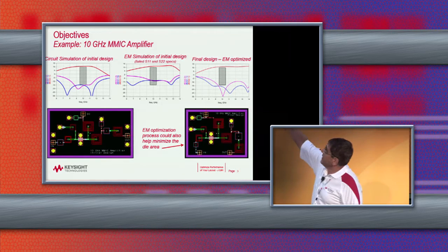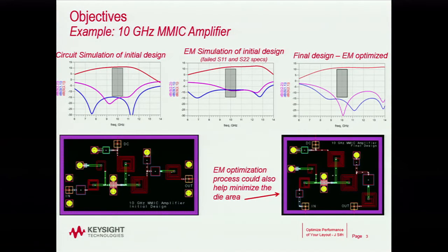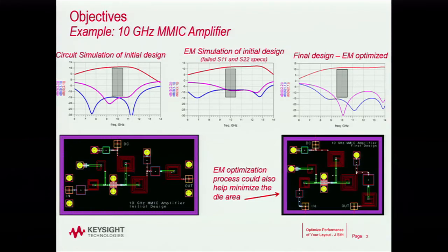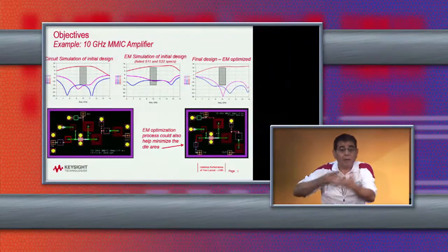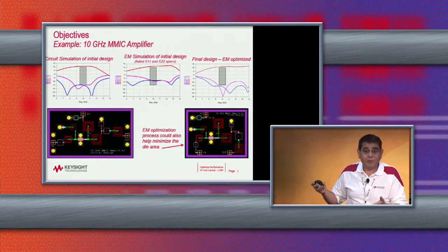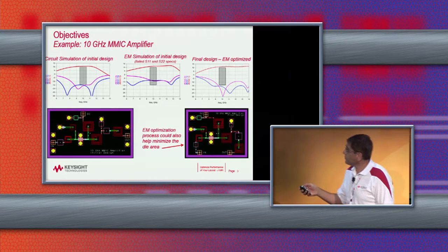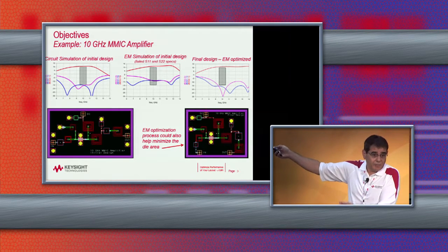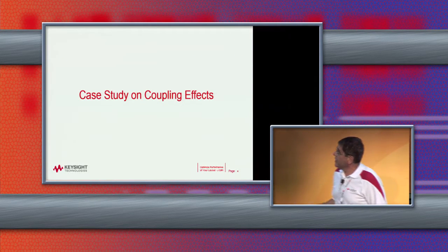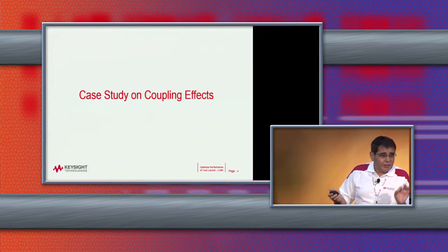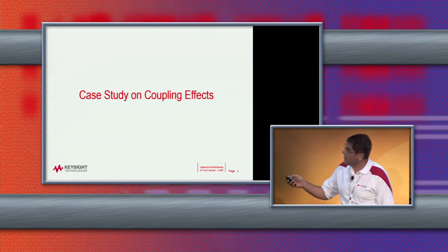So what do you do? You don't want to go back to the circuit simulation and do guesswork to fix it. You basically parameterize and EM optimize the circuit. With EM optimization you have confidence that this is going to meet specs, and the process also helps you shrink your device — to make it smaller — because all the coupling effects are accounted for. This puts a perspective on the talk, and I want to show you some case studies.